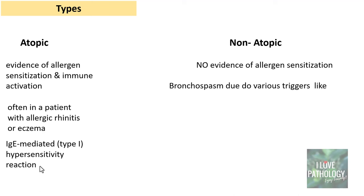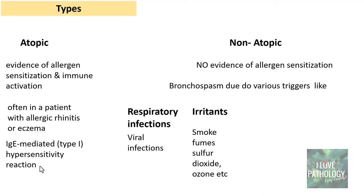Non-atopic asthma manifests with bronchoconstriction triggered by various stimuli, which can be as simple as respiratory infections like routine viral infections; irritants like smoke, fumes, sulfur dioxide, or ozone; or it could be due to cold air, stress, or even exercise inducing bronchoconstriction or bronchospasm.